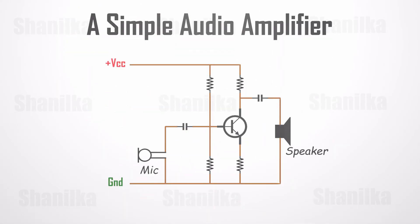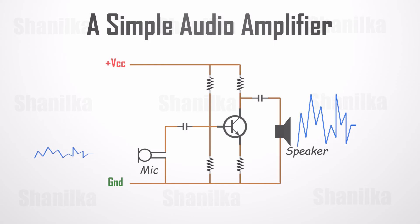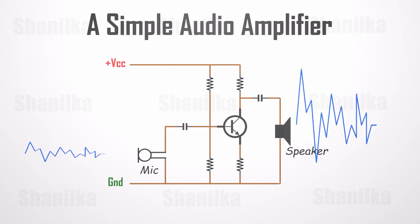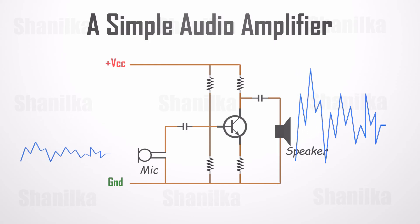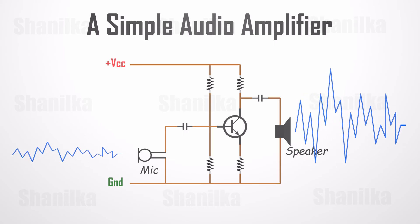Transistor amplifiers are useful in things like hearing aids. A hearing aid has a tiny microphone that picks up sounds from the world around you and turns them into fluctuating electric currents. These are fed into a transistor that boosts them and powers a tiny loudspeaker, so you hear a much louder version of the sounds around you.